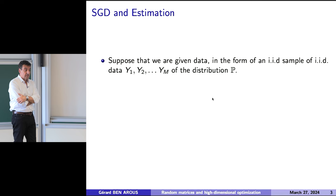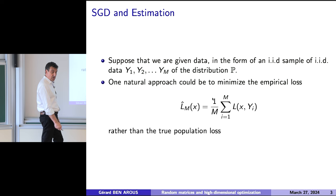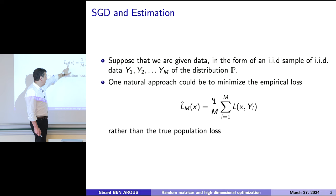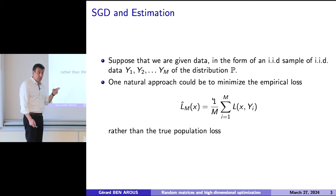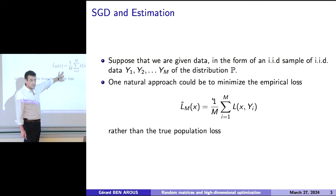What you have instead of the population loss is data. You have a task, which is to find this parameter, and data y_1, ..., y_m — an IID sample of the distribution p. What you could do, of course, is look at the empirical loss L̂_m, where 'hat' as always in statistics means empirical and m is to remember the size of the sample. It's just the mean of the loss on your data points. This one is accessible — you have it because you have the data. The law of large numbers tells you that if m is very large, this should be close to phi, the population loss.